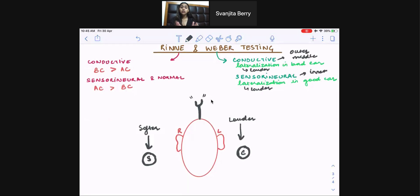So now you're between these two options. It can either be conductive hearing loss in the louder ear, or it can be sensorineural hearing loss in the softer ear. Now, to move further from here, we have to do the Rinne test.